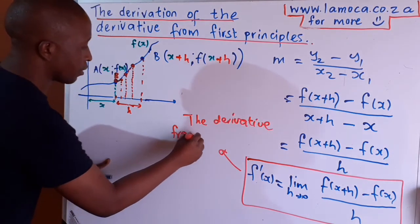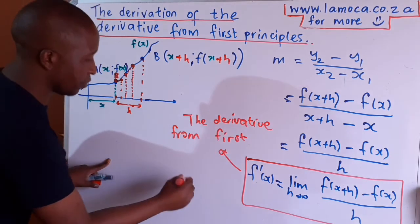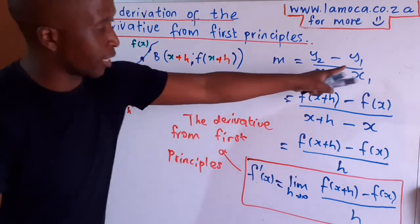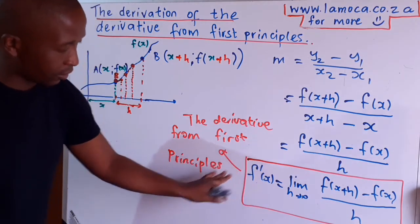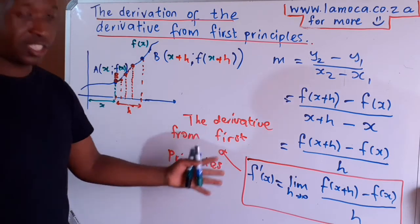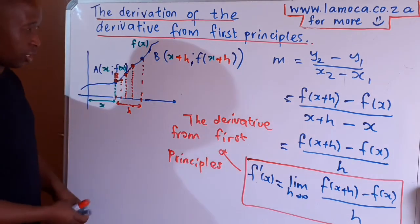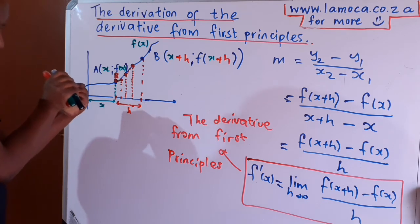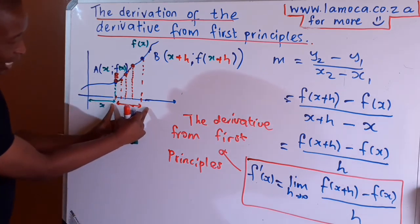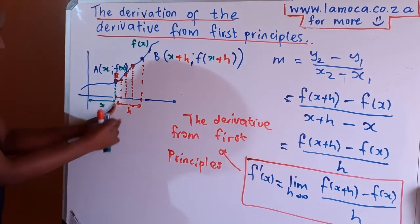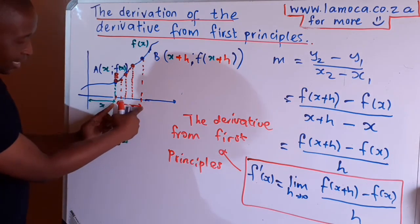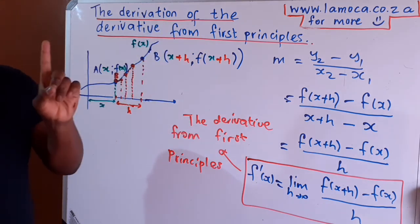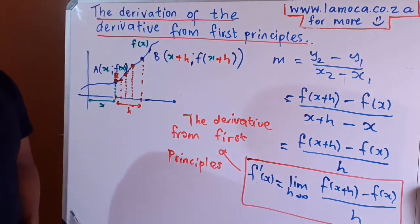This method is called finding the derivative by first principles, or by definition from first principles. It comes directly from the gradient formula y2 minus y1 over x2 minus x1. Whenever someone asks you to find a derivative, they're asking for the gradient at one point — not between two points. We achieve that by forcing the two points to come closer together until they become one, by taking the limit as h approaches zero.